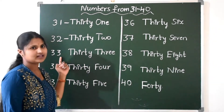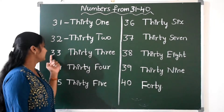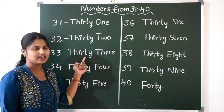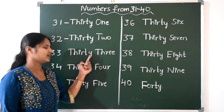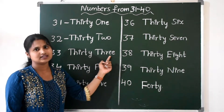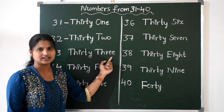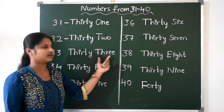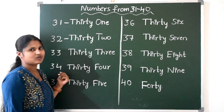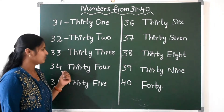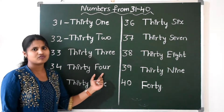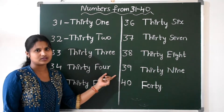Next, 33. T-H-I-R-T-Y, THIRTY, T-H-R-E-E, 3. 33. Next, 34. T-H-I-R-T-Y, THIRTY, F-O-U-R, 4. 34.